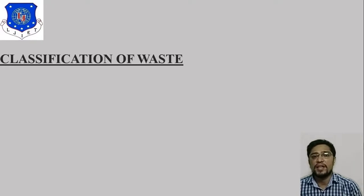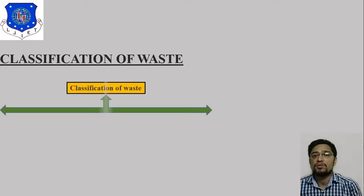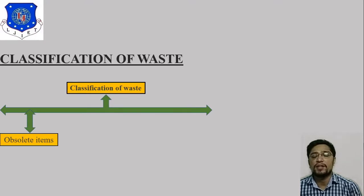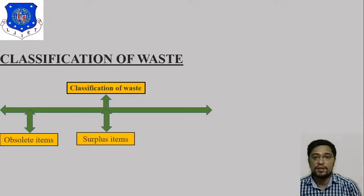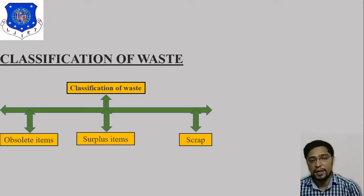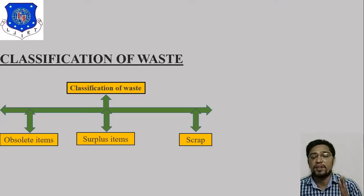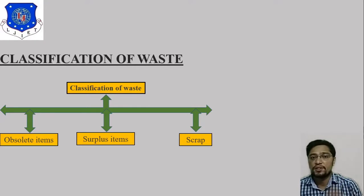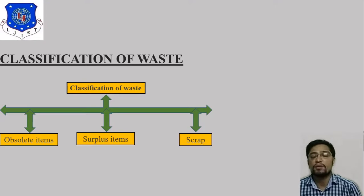The next topic is classification of waste. Here there is a table related to classification of waste. The first type is obsolete items, the second is surplus items, and the third is scrap. So the three classifications of waste are: obsolete, surplus, and scrap.